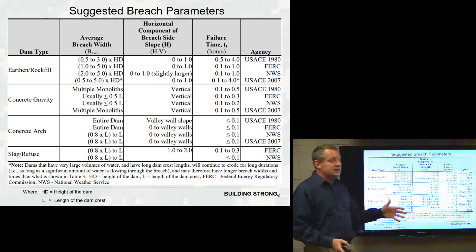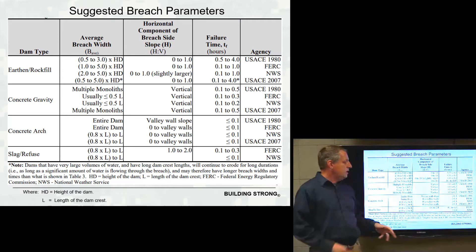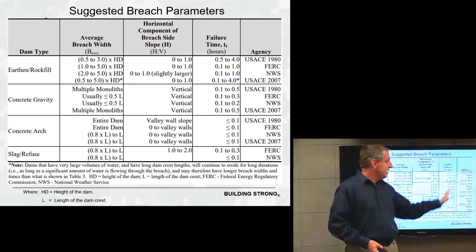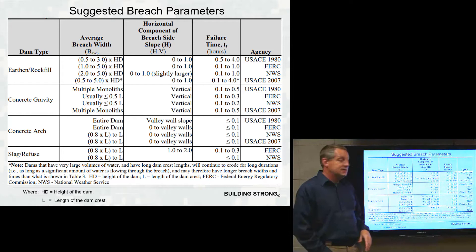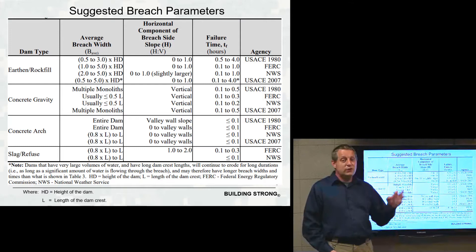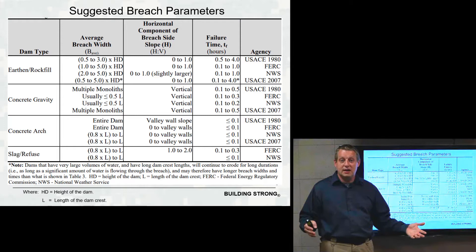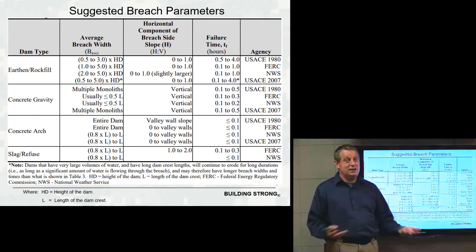Gary Bruner has boiled down information from multiple documents, showing the range of possible average breach widths, failure times, and side slopes for different types of dams. The range of these is actually pretty substantial. If you start with these sorts of parameters, you definitely need to do some sensitivity analysis — look at a median width and time, then a high end and low end to see how sensitive your model is. If it's very sensitive, you'll have to report some of that uncertainty.